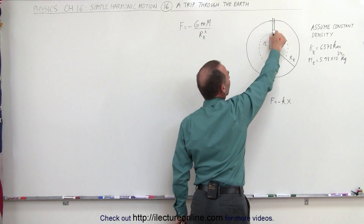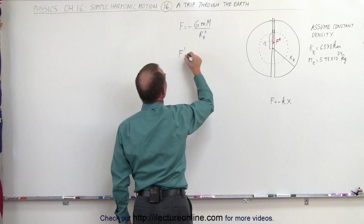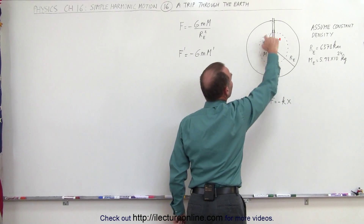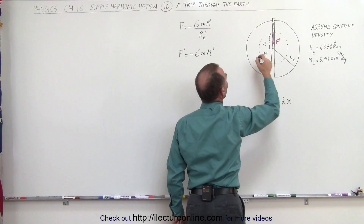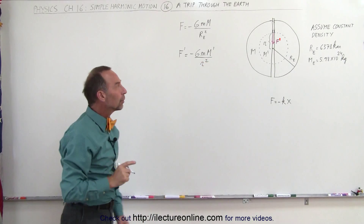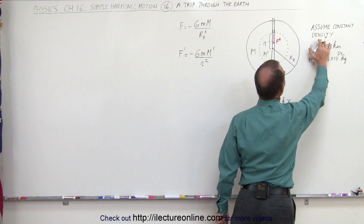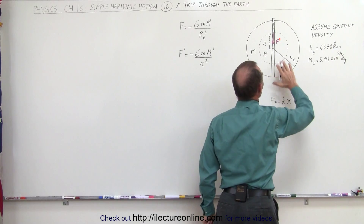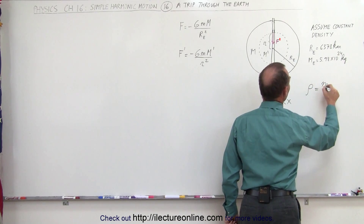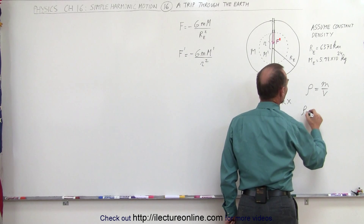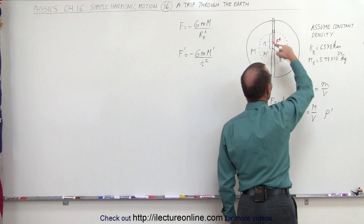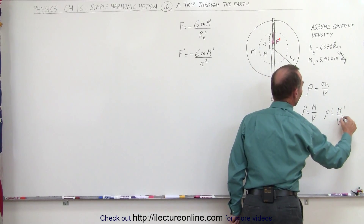What would the force be at an intermediate location? We'll call that F prime, which equals minus G times m times m prime, where m prime is the mass of the remaining portion of the earth's sphere inside that orbit, divided by r squared. Since the density is the same throughout, the density of the whole earth equals the density of the inner portion. Density equals mass divided by volume, so the density of the whole earth equals M divided by the total volume, and density prime equals m prime divided by volume prime.